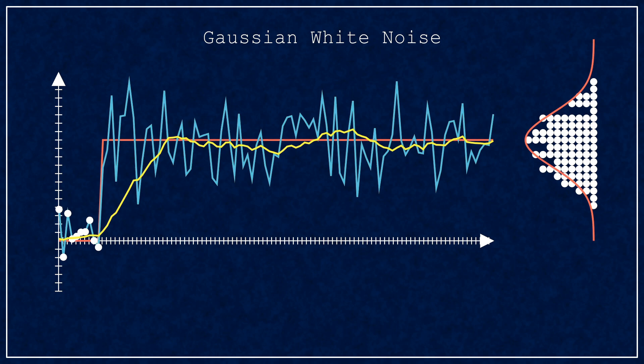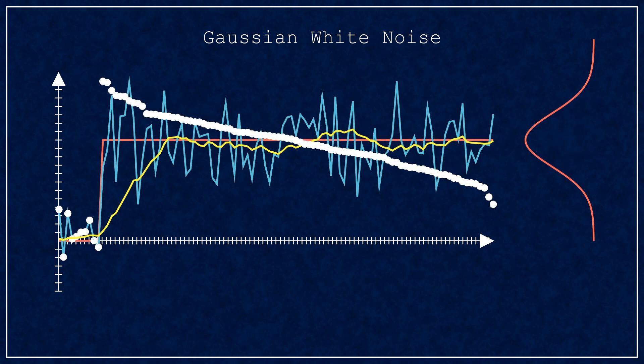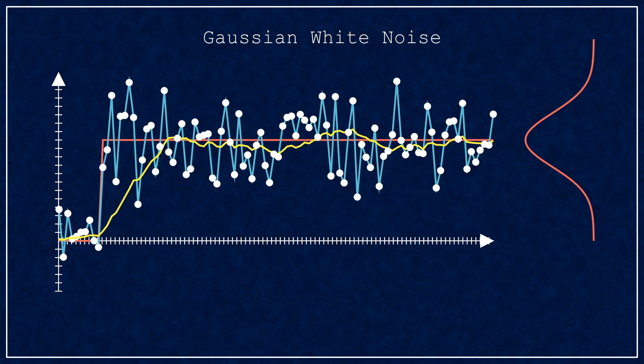Second, the white part refers to the timely arrangement of the samples. For example, you could unwrap the distribution in a descending order, but that wouldn't be noise. White noise samples are independent from each other, so they're all over the place.